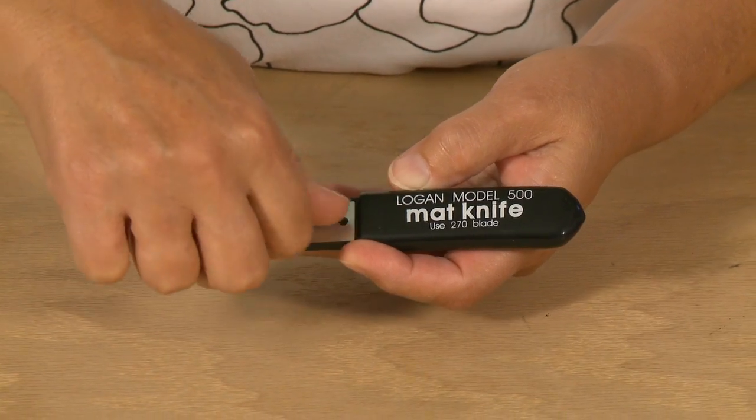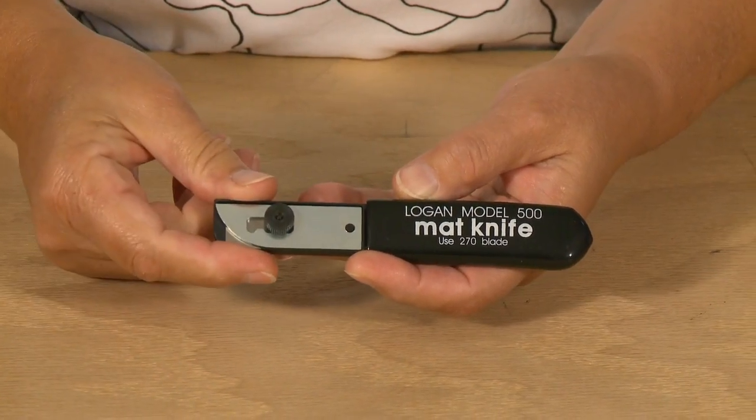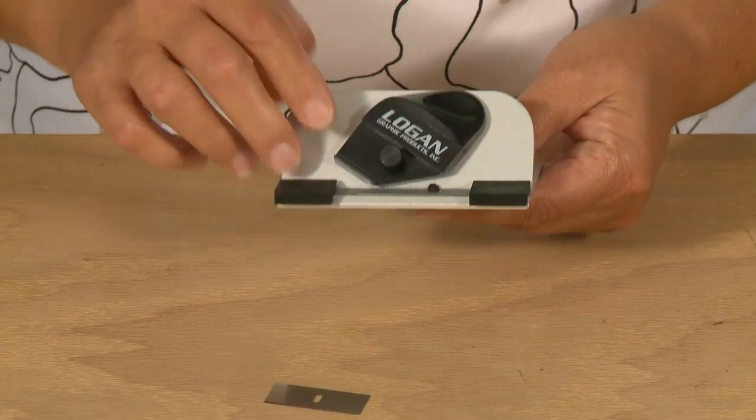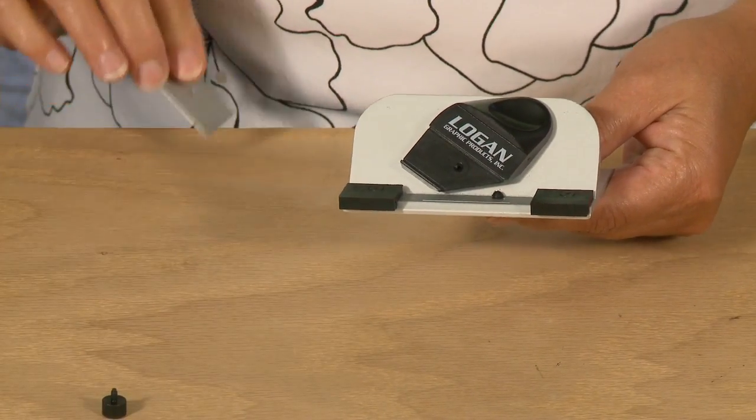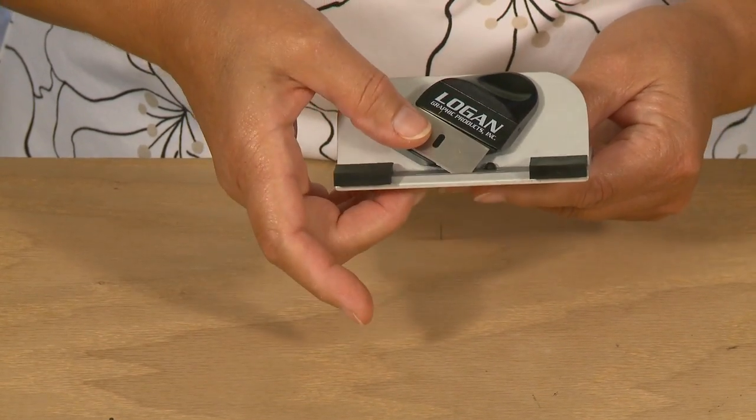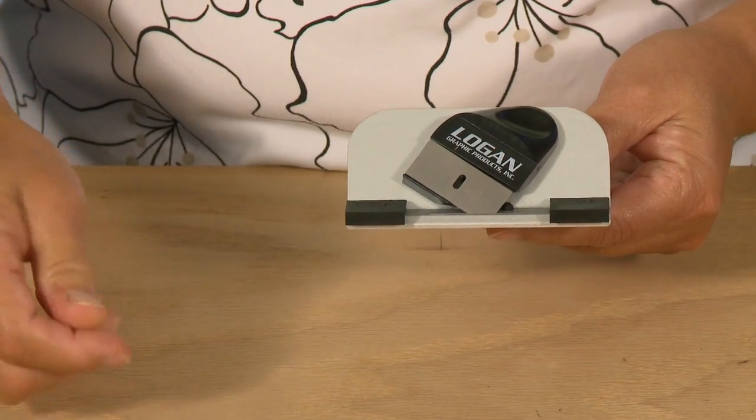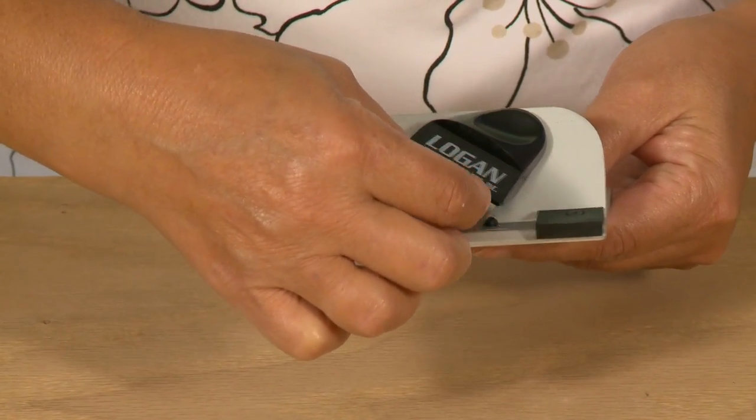To install the blade on the push style bevel cutter, first remove the blade knob and install one Logan 270 blade sharp side down onto the blade holder and down into the blade slot, then replace the blade holding knob.